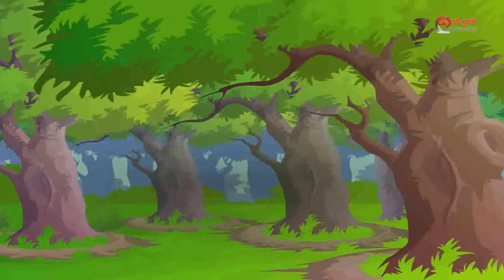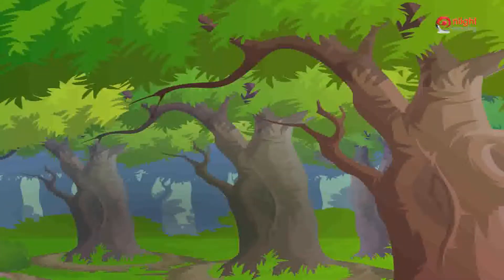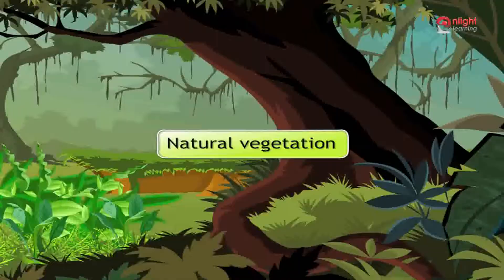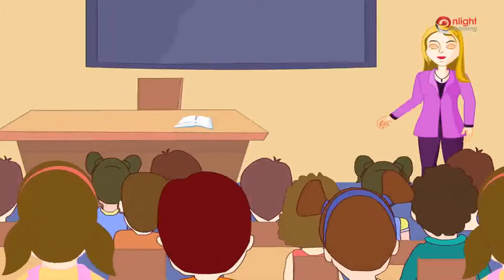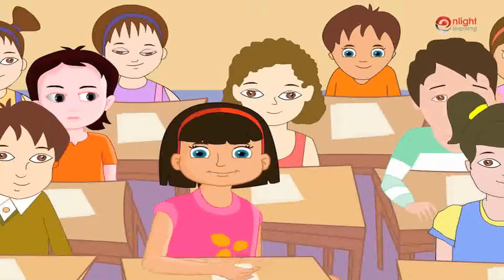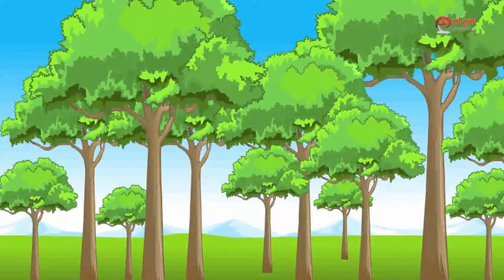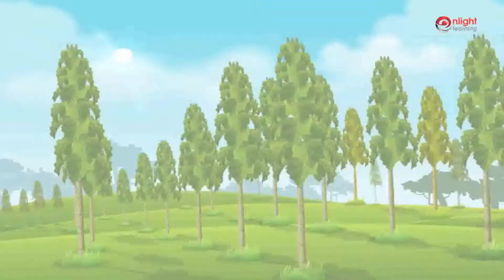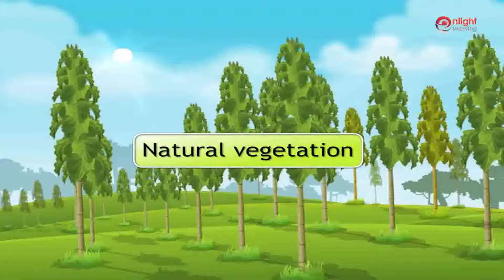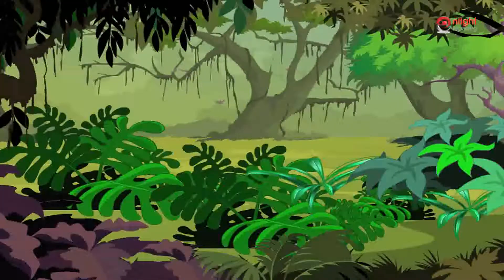A forest is a large area of land thickly covered with trees, bushes, etc. The trees and bushes grow on their own — this is called natural vegetation. Bushes are low plants with many branches that grow near the ground. Natural vegetation refers to a plant community which has grown naturally without human aid and has been left undisturbed for a long time.